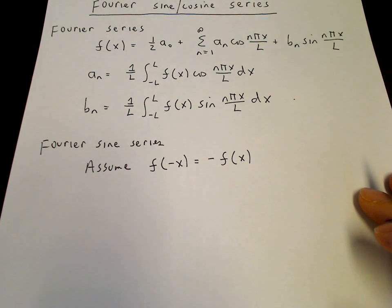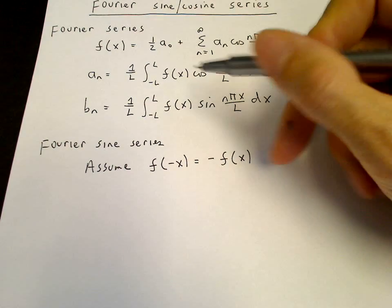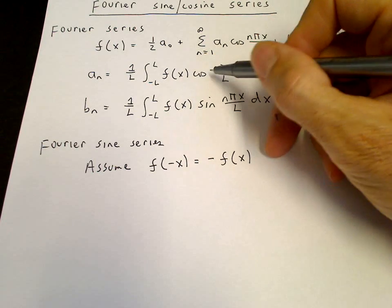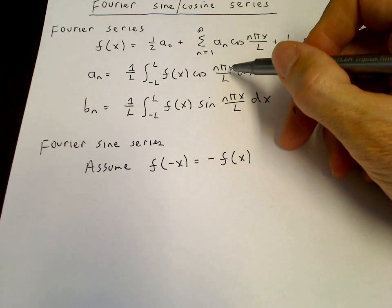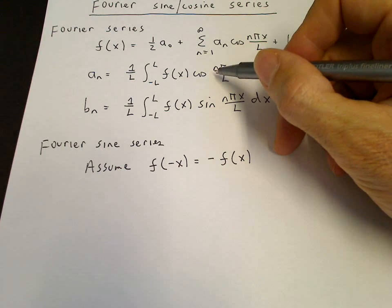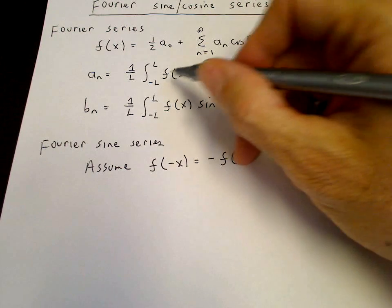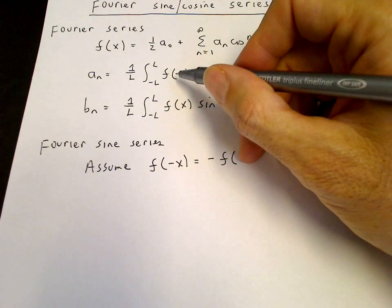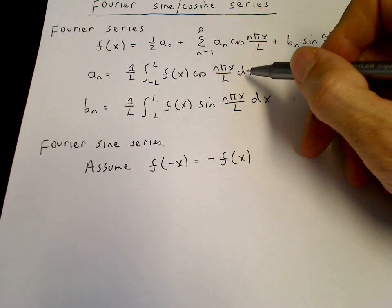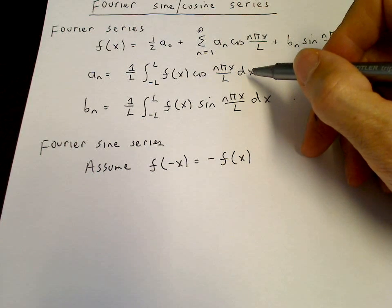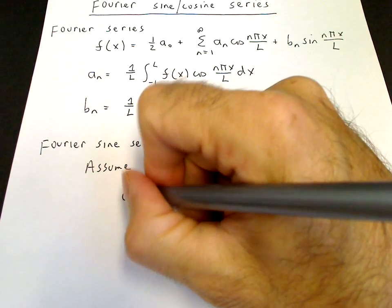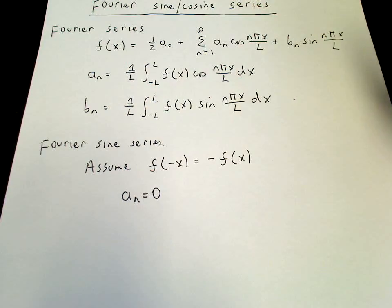So what happens if f is odd? Well, f is odd and cosine is even. An odd function times an even function is odd. So if f is odd, then this integral will be of an odd function, which is 0. So in that case, a_n equals 0.